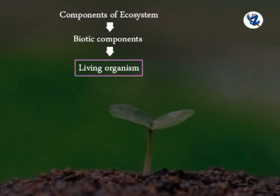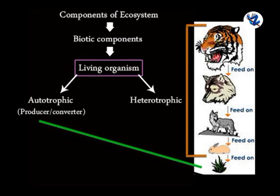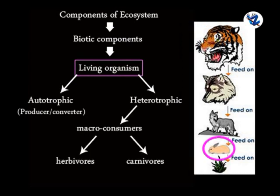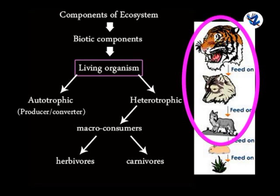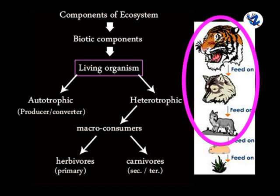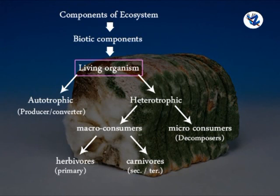Biotic components include living organisms. They may be autotrophic — i.e., producers and converters — or heterotrophic. Heterotrophic organisms are of two types: macro-consumers, which are herbivores and carnivores (herbivores are primary consumers while carnivores or omnivores may be secondary or tertiary consumers), and micro-consumers, which are commonly decomposers — saprophytes including bacteria and fungi.